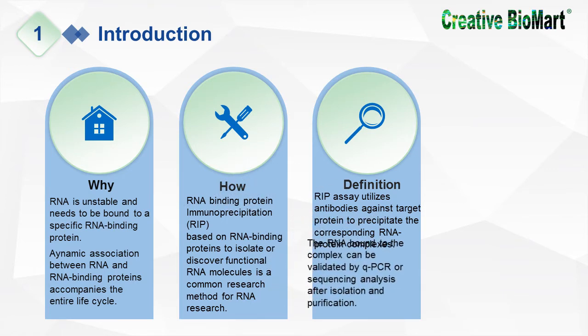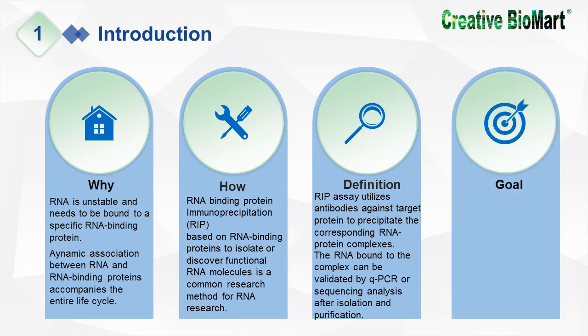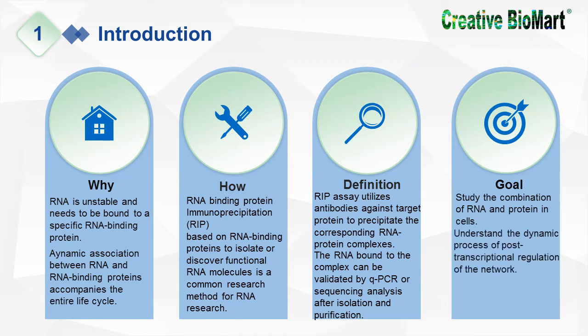The RIP assay utilizes antibodies against a target protein to precipitate the corresponding RNA-protein complexes. The RNA bound to the complex can be validated by qPCR or sequencing analysis after isolation and purification. The goal is to study the combination of RNA and protein in cells, understand the dynamic process of post-transcriptional regulation, and help discover the regulatory targets of mRNAs.